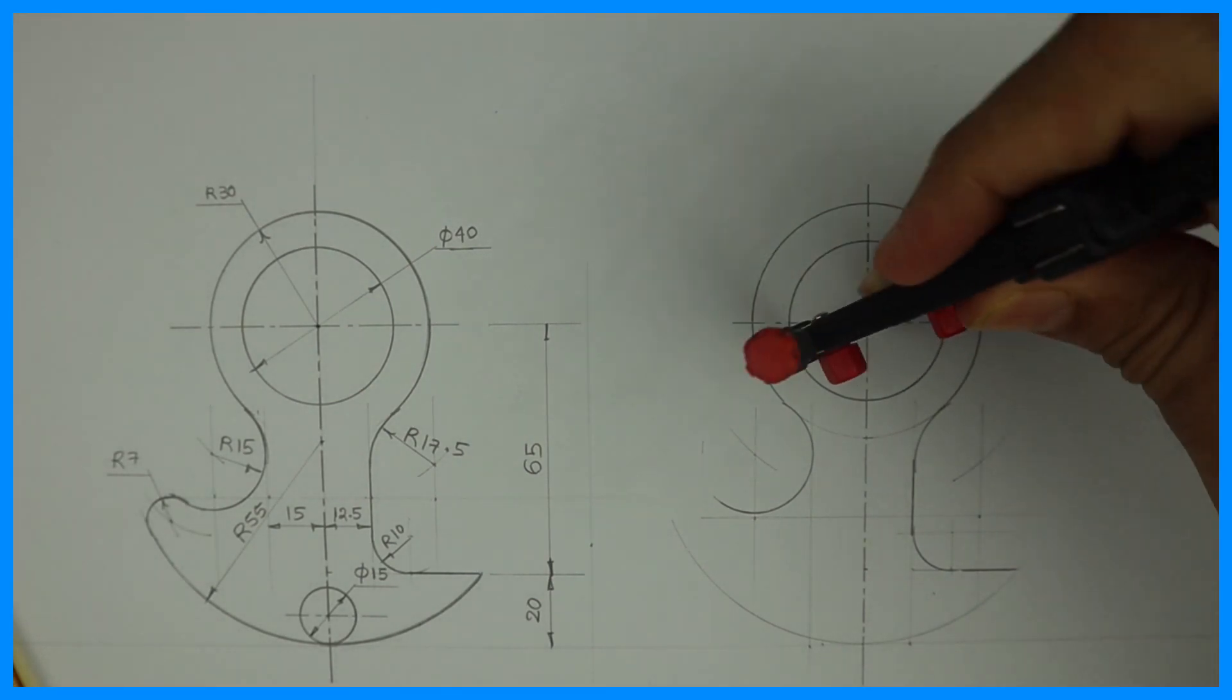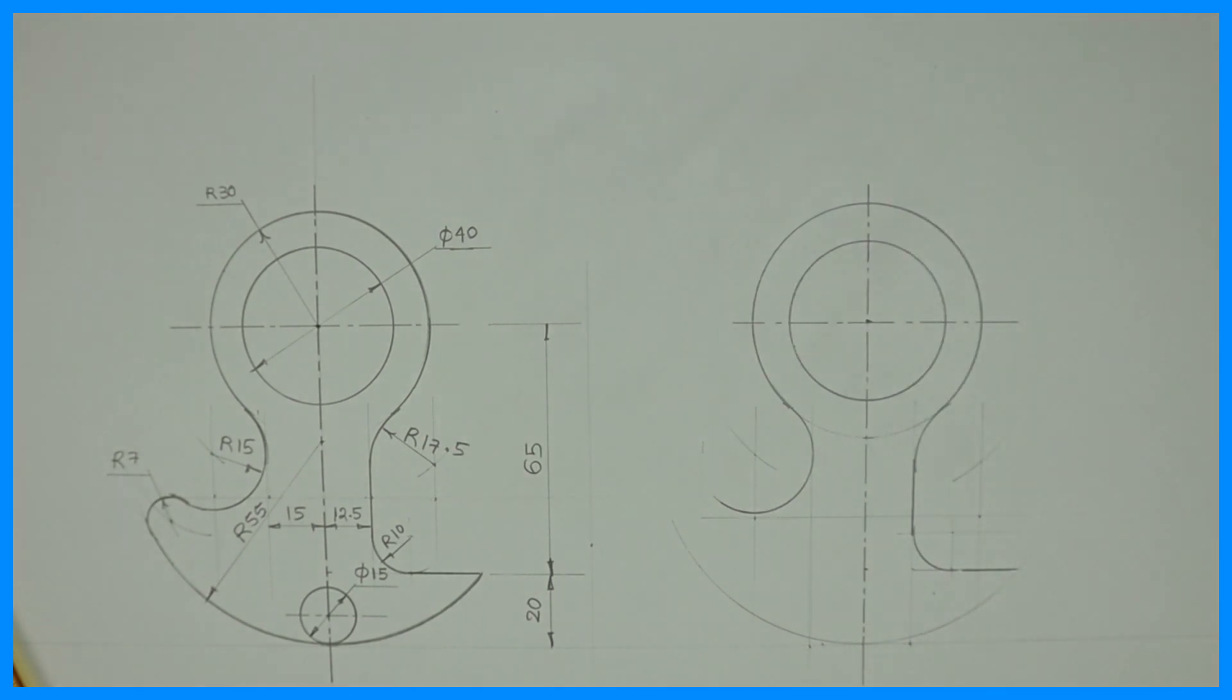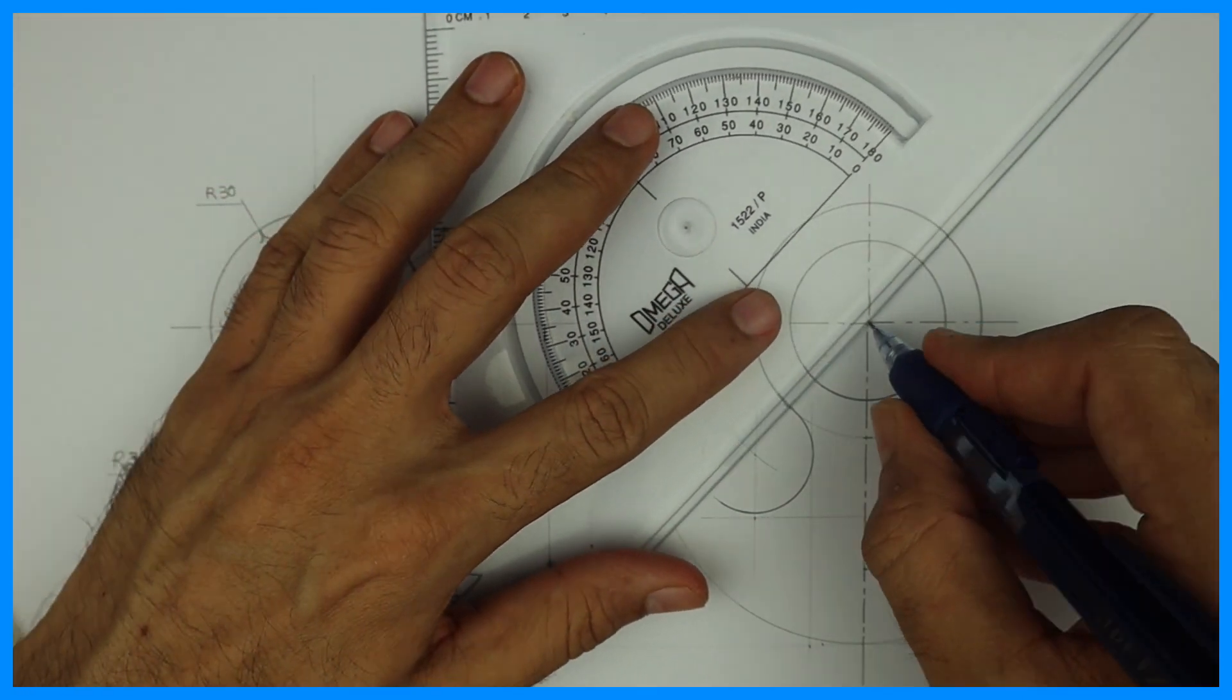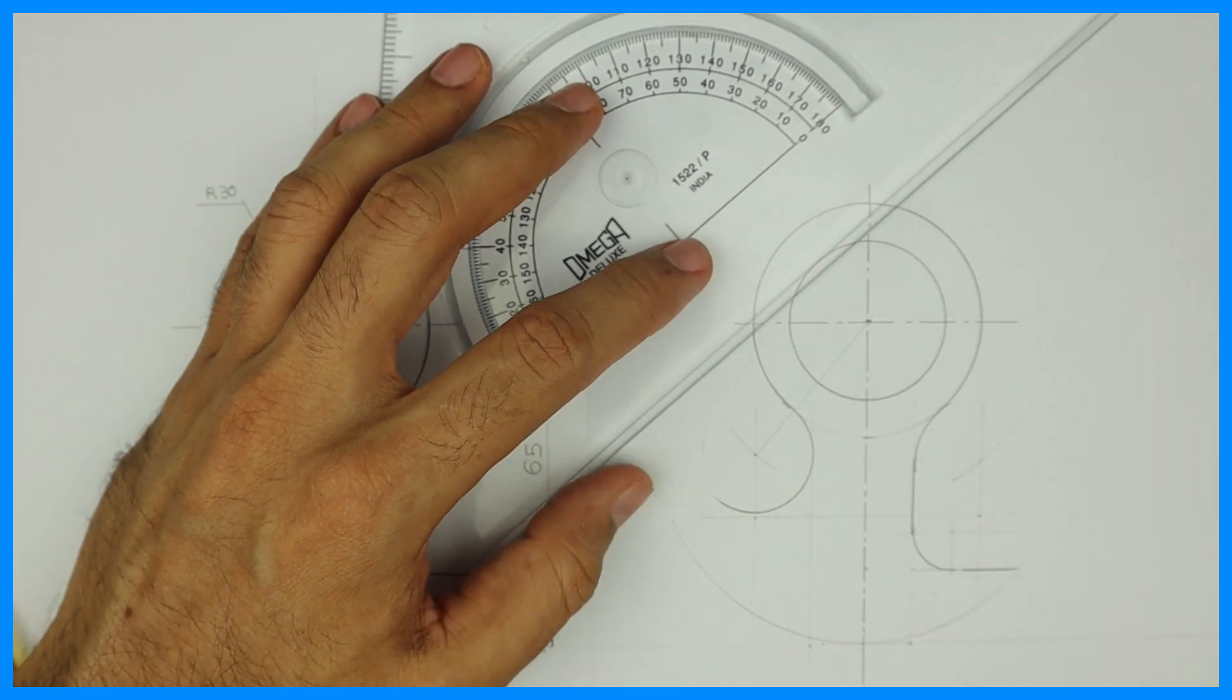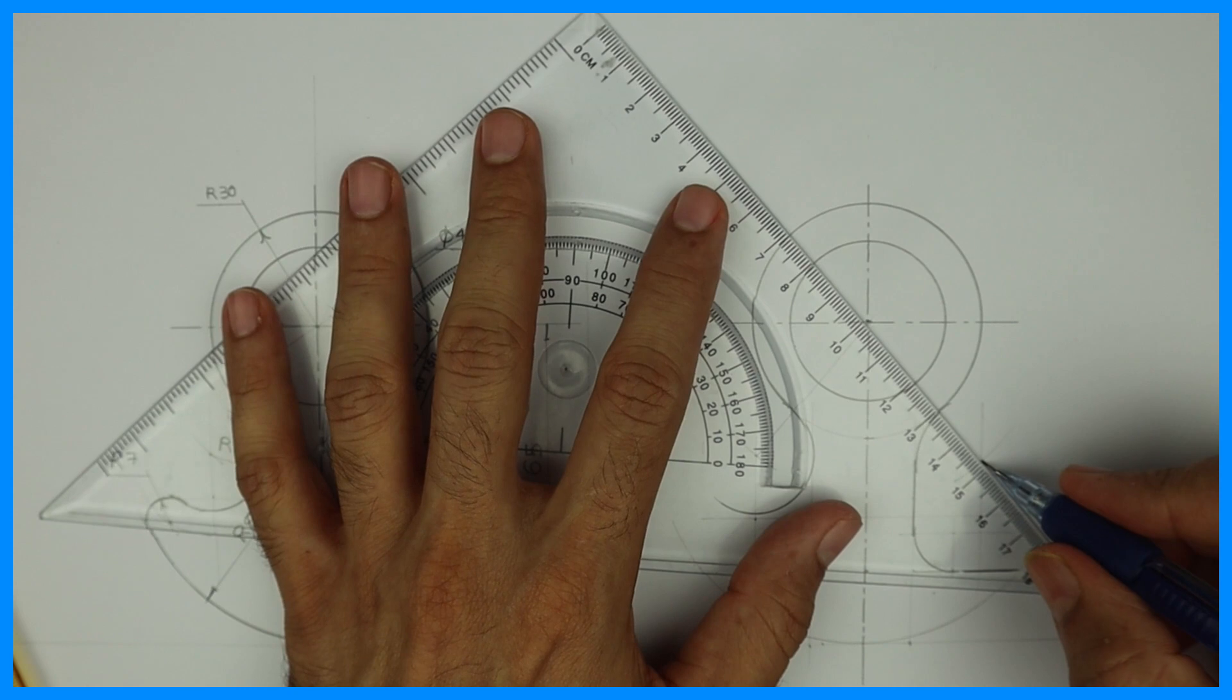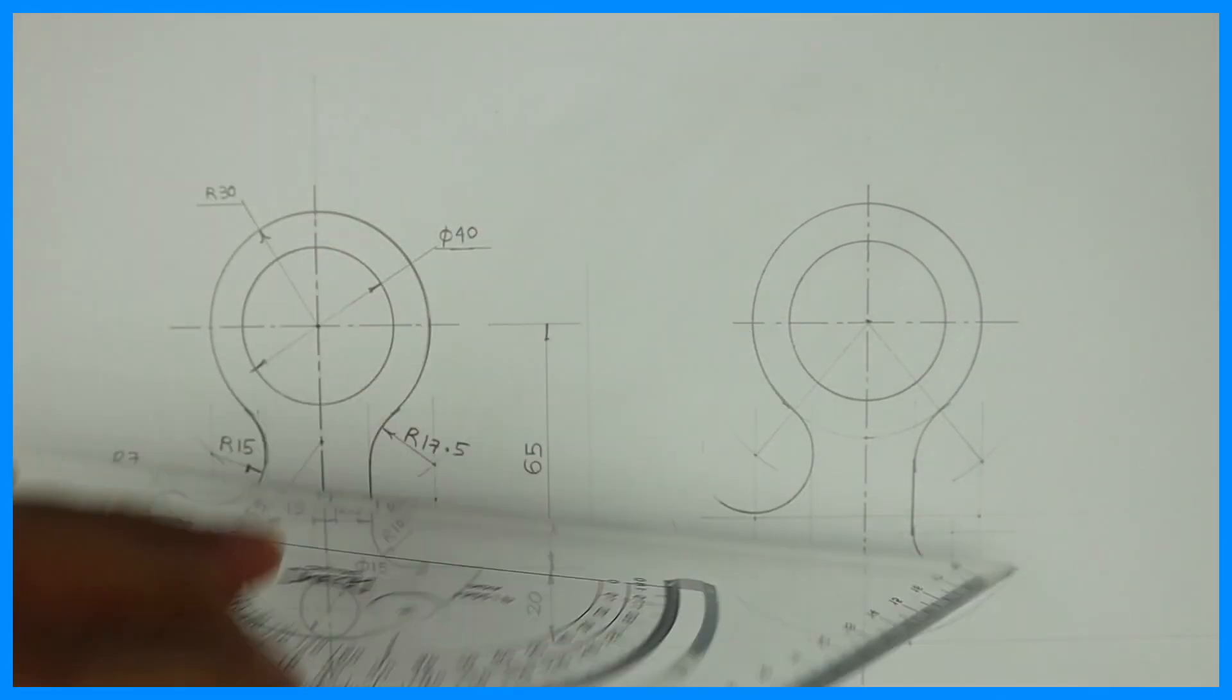Now what we need to do, we need to draw that radius 7. If you see on the left hand side corner, this I will show you how to identify exact center, exact arc. So join center to center like this. You will know the exact point from where your arc is going to start.